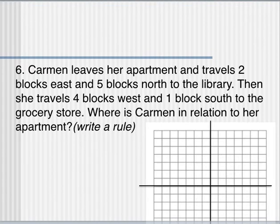Last question. Carmen leaves her apartment and travels 2 blocks east and 5 blocks north to the library. Then she travels 4 blocks west and 1 block south to the grocery store. Where is Carmen in relation to her apartment? So first off, let's say her apartment is on the origin. Make a dot. On the origin, that's where she lives. That's her starting point. So from there, she travels 2 blocks east. From there, 5 blocks north, here's the library. From the library, she travels 4 blocks west and 1 block south. Here's the grocery store.